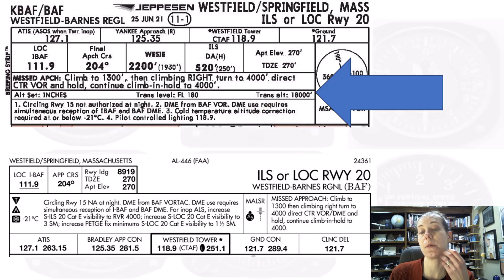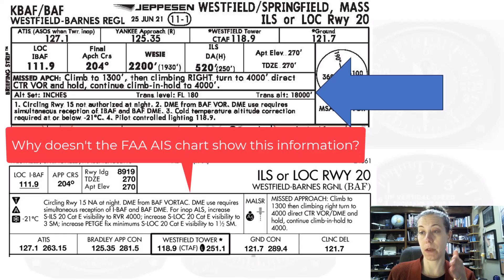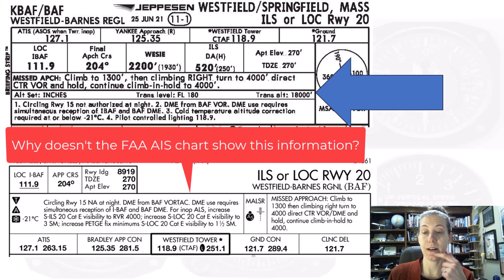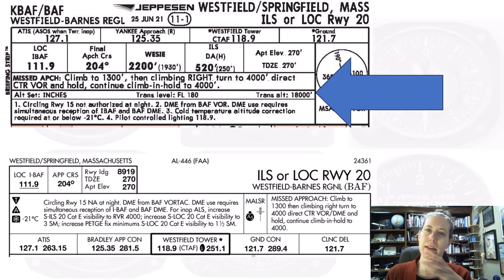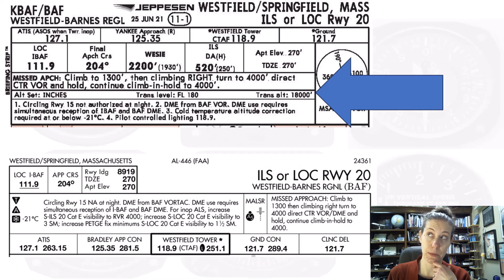In fact, you might not even know what it means. It's not in the FAA chart — I've got the same chart for both the same airport here, but it's not on the FAA chart. So why is it not on the FAA chart, but it is on a Jeppesen chart? And what does it even mean? We're going to talk about that today, plus a bonus story of why altimeter settings really matter when you're flying internationally, sometimes even more than when you're flying in the U.S.